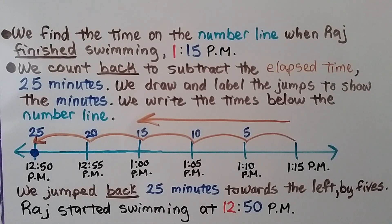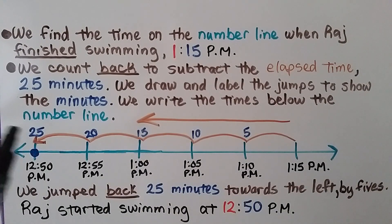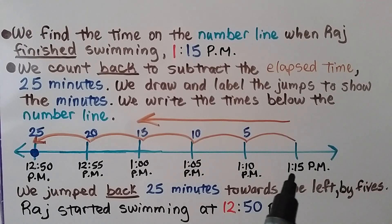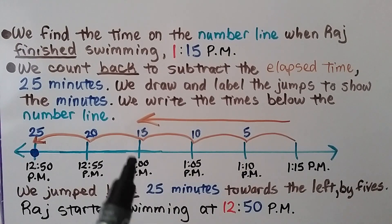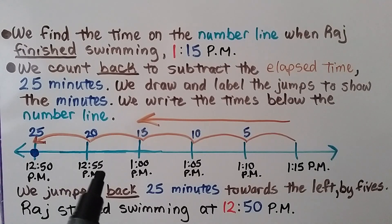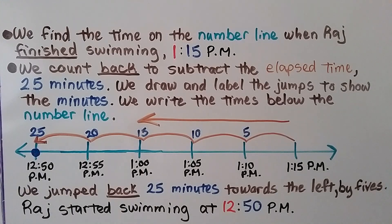We draw 1:15 p.m. on the number line — that's where Raj finished swimming. Now we start on the right-hand side and count back to subtract the elapsed time, going back by fives: 1:10, 1:05, 1:00, and then — since there are 60 minutes in an hour — going back five more takes us to 12:55. Then back another five minutes to 12:50. We jump back 25 minutes toward the left by fives, so Raj started swimming at 12:50 p.m.